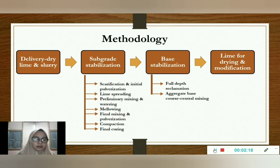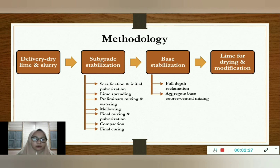Followed by final mixing and pulverization: mixing and pulverization should continue until 100% completion. After final mixing, compaction should begin immediately using a steel wheel roller. Lastly, final curing begins, and the compacted subgrade is left alone to harden.